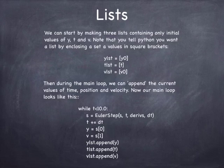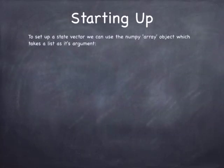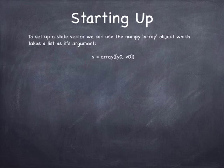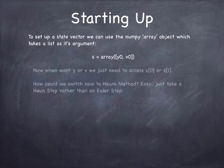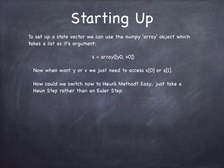In fact, I think in some of my code, I don't even bother writing y equals s sub 0. I just say ylist.append(s[0]) and vlist.append(s[1]) because it basically accomplishes the same thing. To get the thing started, we need to initialize the state vector. And we can do that using the array constructor, just as we have before, by putting the initial state as the array containing the initial position and the initial velocity. Then when we want to get y or v out, we just access s[0] to get y and s[1] to get v.